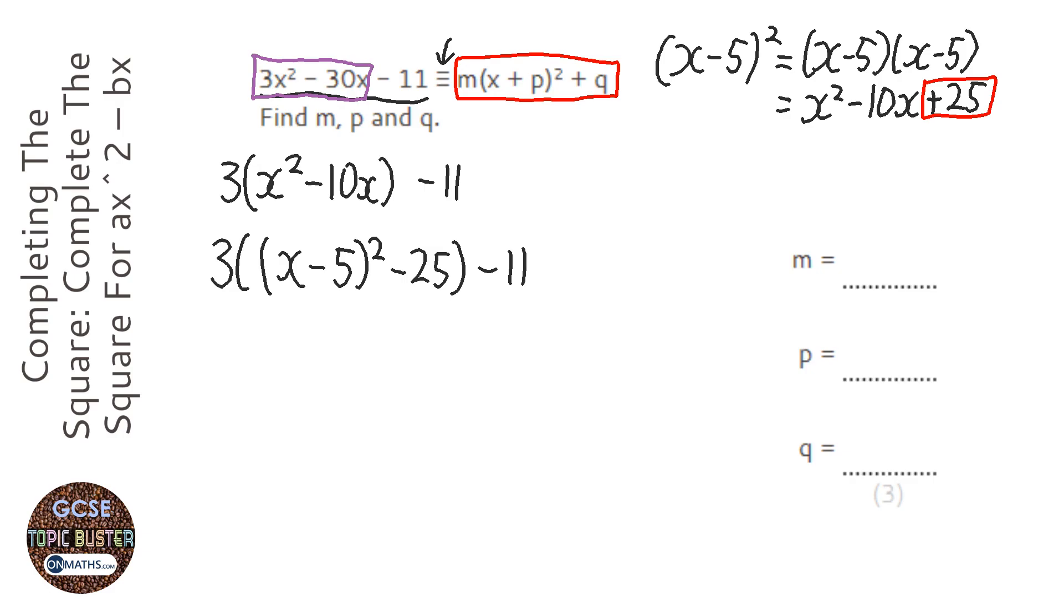Now the next thing I want to do is expand these bracket here. So I'm going to do 3 times x minus 5 squared. I don't need to expand that further. And 3 times minus 25 which is minus 75. And then we've got the minus 11.